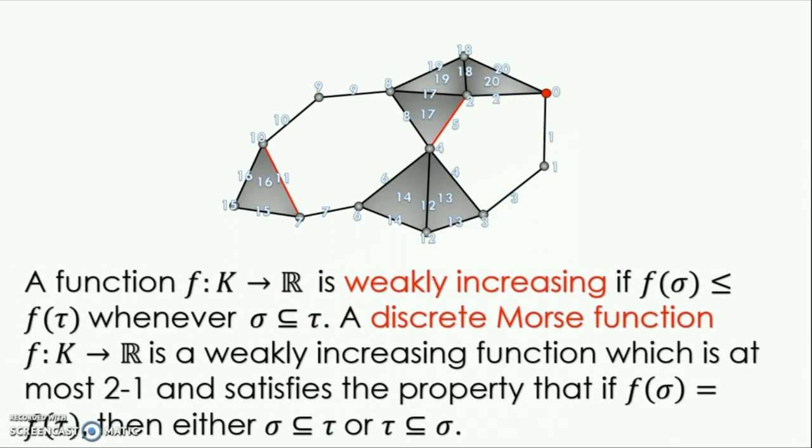Formally, a real valued function on a simplicial complex is weakly increasing if subset inclusion is respected by the function. A discrete Morse function, then, is a weakly increasing function, which is at most 2 to 1, and satisfies the property that if f takes the same value on two simplices, then one simplex must be a subsimplex of the other. This definition is a little convoluted, but the illustration above should make it clear. Every discrete Morse function gives rise to a gradient vector field, so we can think of the two ideas interchangeably.